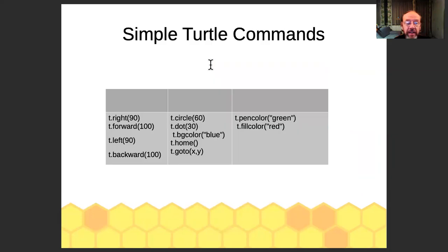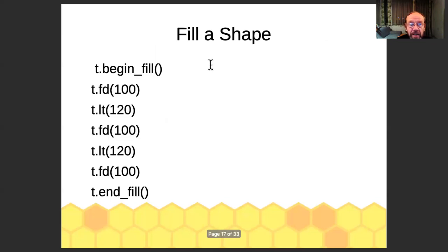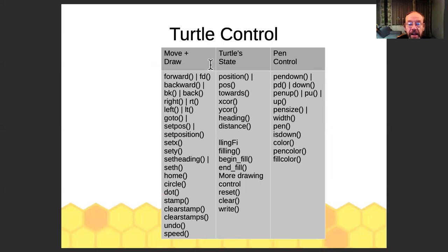The commands are quite simple. In the left column, the turtle can go right, forward, left, or backwards. In the middle column, you can create a circle that's hollow, a dot filled with a background color, set the background color, go home, go to a position, set the pen color, set the fill color. You can do an awful lot with simple commands. To create a shape: begin fill, end fill, and draw within that shape. It's also very important to visit the website for the turtle library, as there are a ton of other commands if you want to do something more obscure.